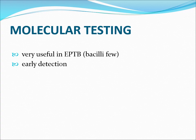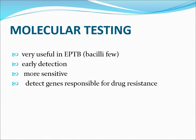Molecular testing is very useful when the bacterial load is very low, especially in extra-pulmonary TB where conventional methods frequently come back negative. Advantages include early detection at very low bacterial levels and the ability to simultaneously detect genes responsible for drug resistance, such as rifampicin and isoniazid resistance.